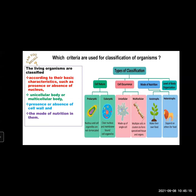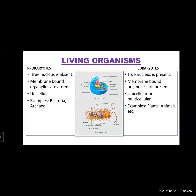Now, when we say presence or absence of nucleus, on the basis of that, organisms were classified as prokaryotic and eukaryotic. What exactly is the meaning of prokaryotes and eukaryotes? Prokaryote means it is the organism in which true nucleus is absent. So true nucleus is not present in those cells. Membrane-bound organelles are absent.